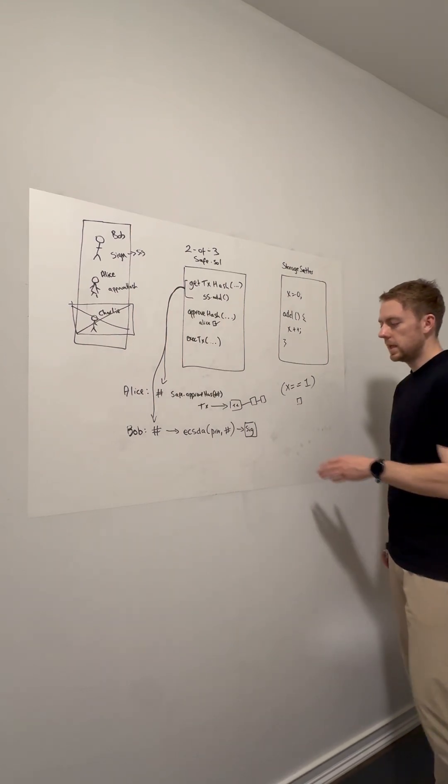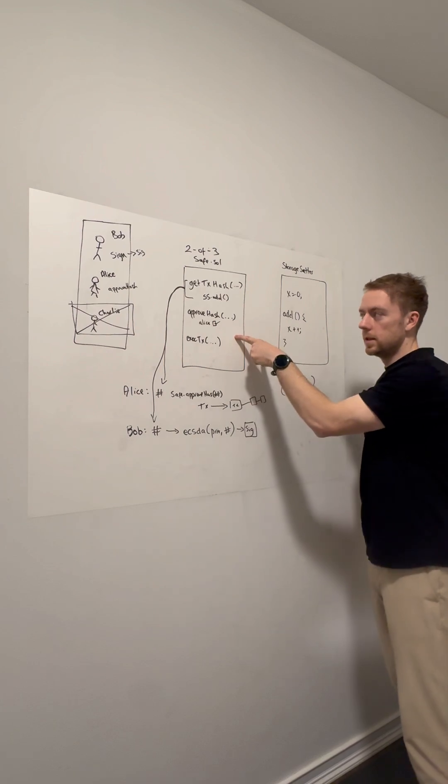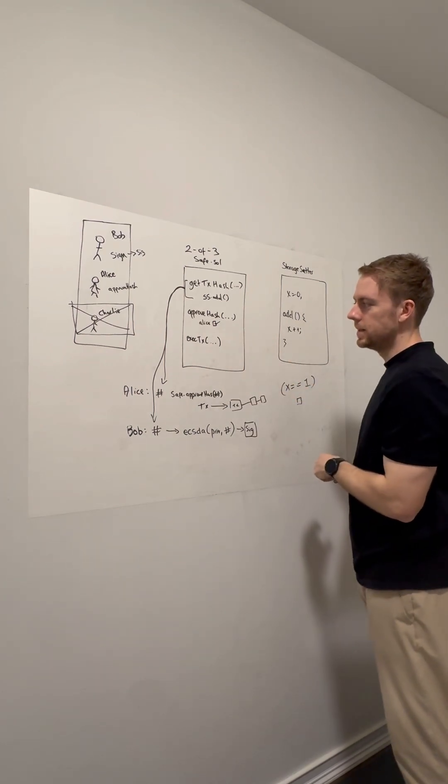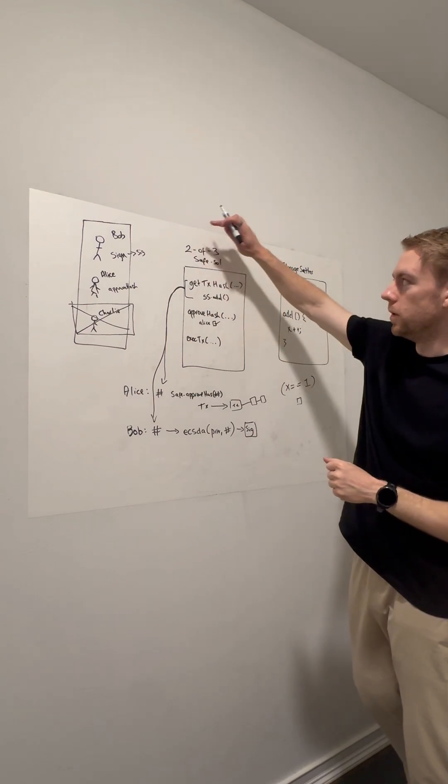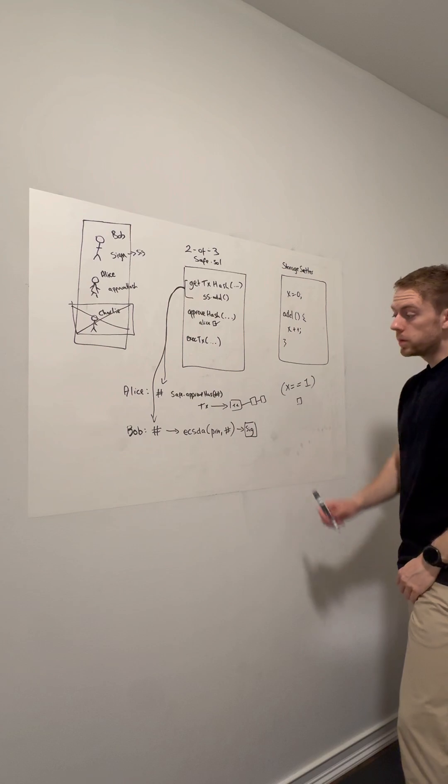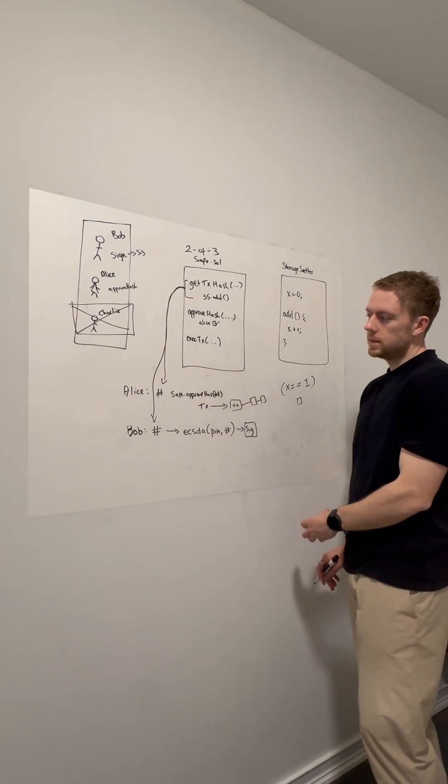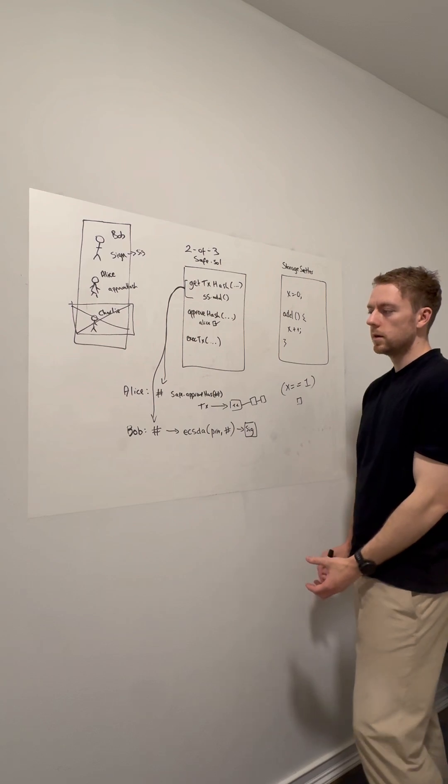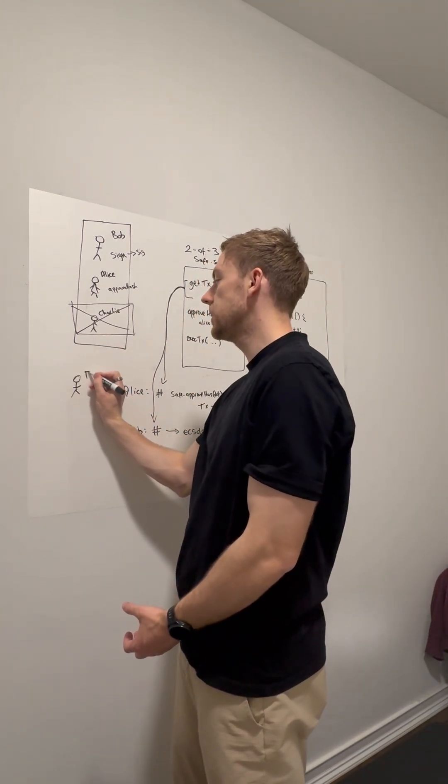This signature is going to be used to make the safe aware that this transaction has reached quorum of two out of three owners. Who's going to do that? Well, Bob could call execute transaction himself, but let's introduce another person here just to show that Bob doesn't have to, and that it's actually...